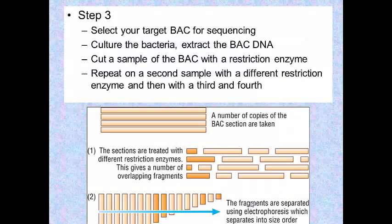Step 3 - you've got to decide which part of the chromosome you want to sequence, so you select your target BAC, culture your bacteria up, take out the BAC DNA, and then you cut up your sample of DNA from that BAC with a restriction enzyme. Then you do it on a second sample with a different restriction enzyme, and so on. That gives you this kind of jigsaw puzzle of fragments.